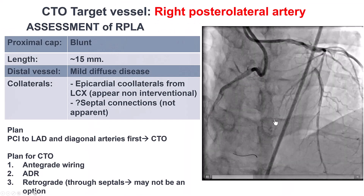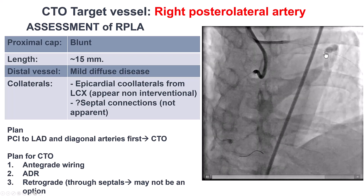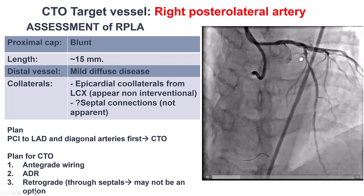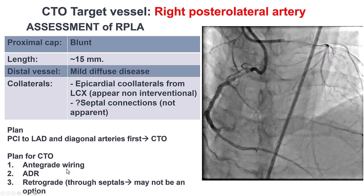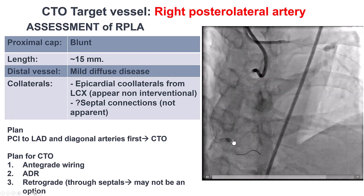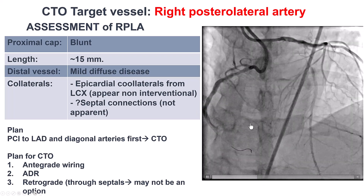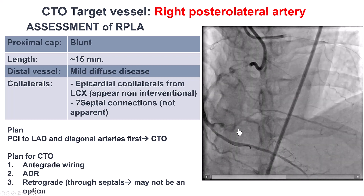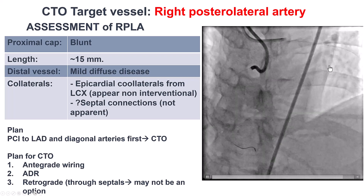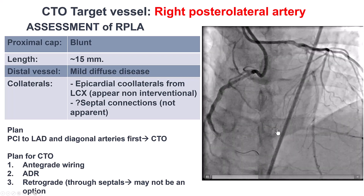How to approach these lesions? The consensus was to start with the non-CTO lesions to canalize the LAD and the diagonal, in part because of the possibility of going retrograde through the septals if antegrade failed. The CTO has a clear proximal cap and relatively short length. There is some diffuse disease on the distal vessel, and the collaterals seem to be mainly epicardial.